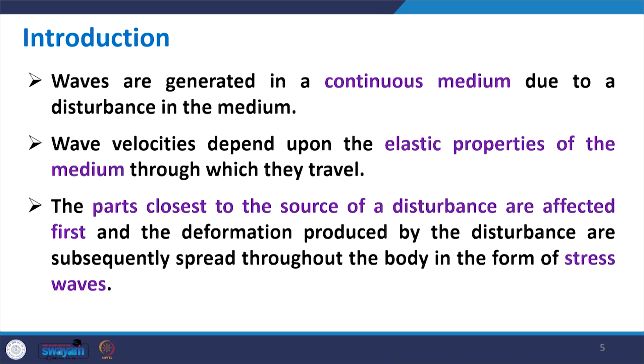When waves are generated due to an earthquake and they propagate, the wave velocity through the medium depends on the properties of that medium. The part closest to the source of disturbance is naturally affected first, and deformations produced by this disturbance are subsequently spread throughout the body in the form of stress waves or elastic waves.